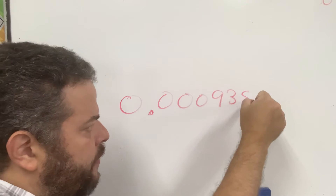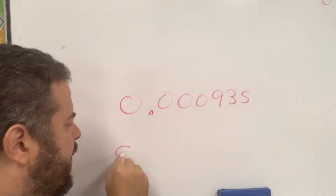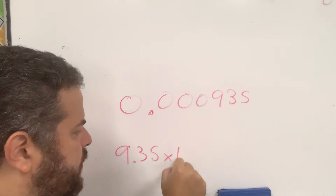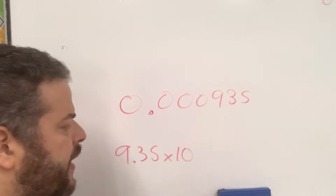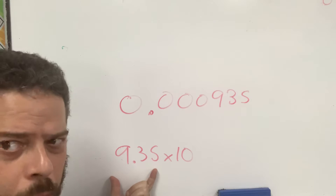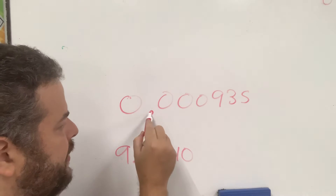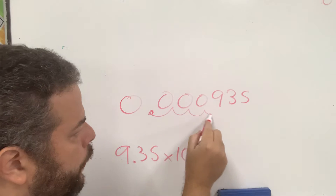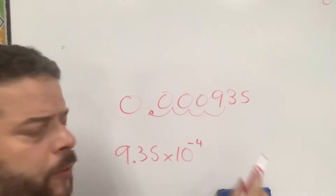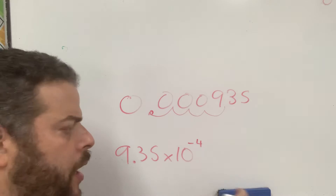0.000935. Again, the number would be 9.35 times 10. It's always going to be times 10, and this number will always be between 1 and 10. Now I had to move my decimal spot 1, 2, 3, 4 units to the right. So that would be negative 4, meaning you're working with a very small number.